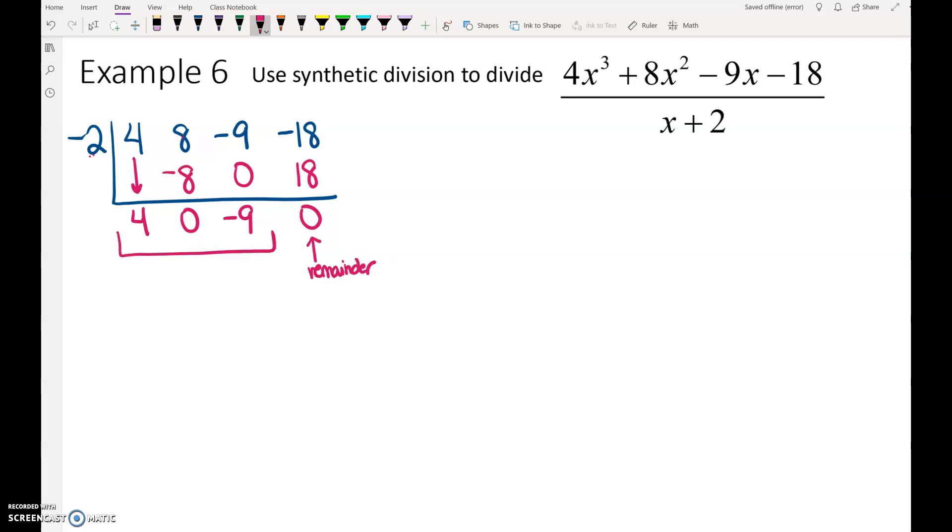And our answer comes from 4, 0, and negative 9. Because we started with x to the third, this first term is going to be x squared. So my answer is 4x squared plus 0x minus 9. And we don't need to worry about the remainder. If the remainder was anything other than 0, you would put the remainder over x plus 2. But we don't need to include that because we don't have a remainder. Do we really need to put the 0x term in there? No. So our final answer is 4x squared minus 9.